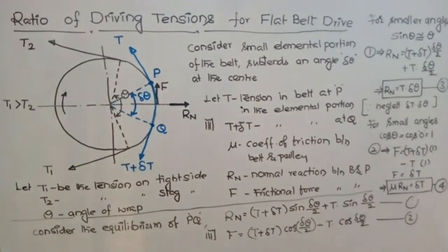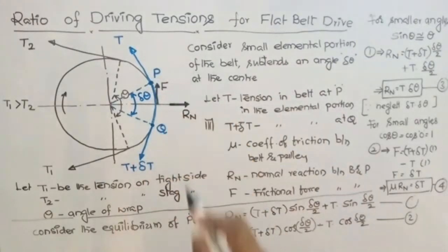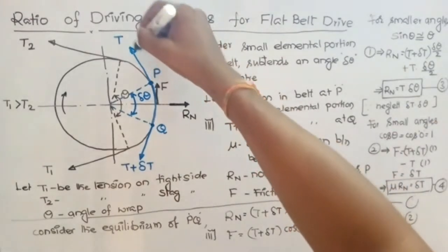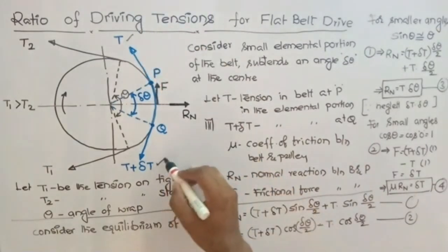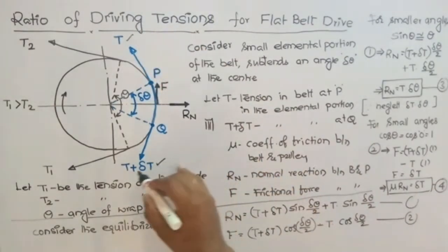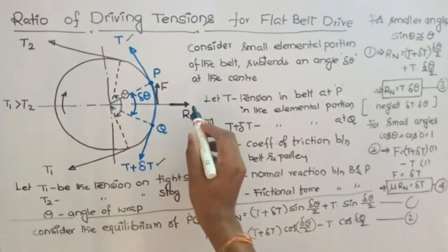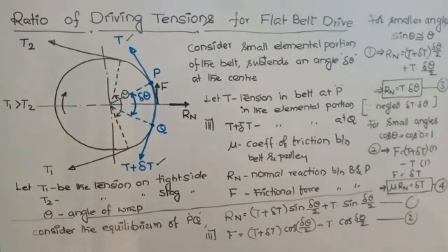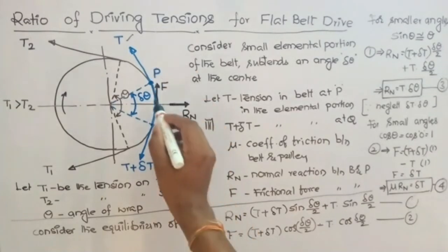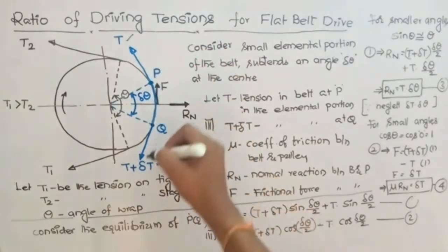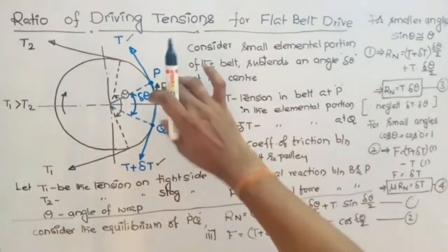So first we consider equilibrium of this portion of the belt PQ. This PQ is under equilibrium when subjected to tension T on one side, tension T plus delta T on the other side, normal reaction Rn tending to push the belt outward, and frictional force tangential to the arc.